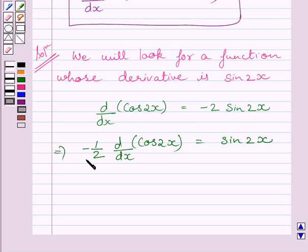We know -1/2 multiplied by d/dx of cos 2x is equal to d/dx of (-1/2 cos 2x).